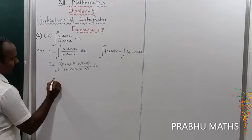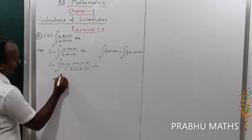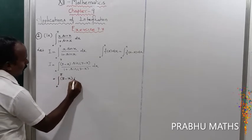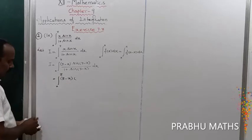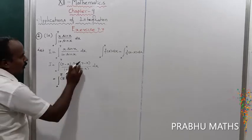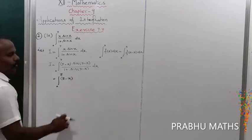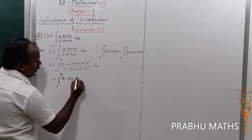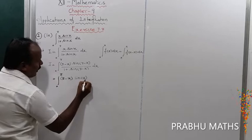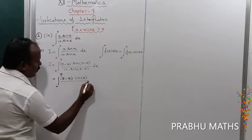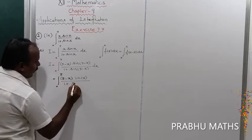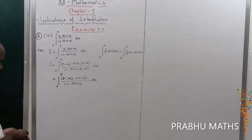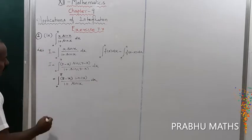This gives integral from 0 to π of (π minus x) times sin(π minus x) divided by 1 plus sin(π minus x) dx. Using the identity sin(180° minus θ) equals sin θ, sin(π minus x) becomes sin x. So the denominator 1 plus sin(π minus x) becomes 1 plus sin x.